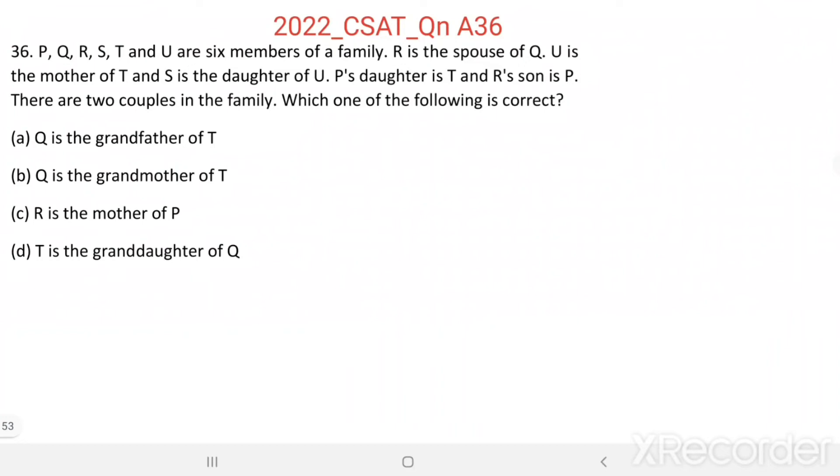Question number 36. P, Q, R, S, T and U are 6 members of a family. R is the spouse of Q, U is the mother of T and S is the daughter of U. P's daughter is T and R's son is P. There are two couples in the family. Which one of the following is correct?